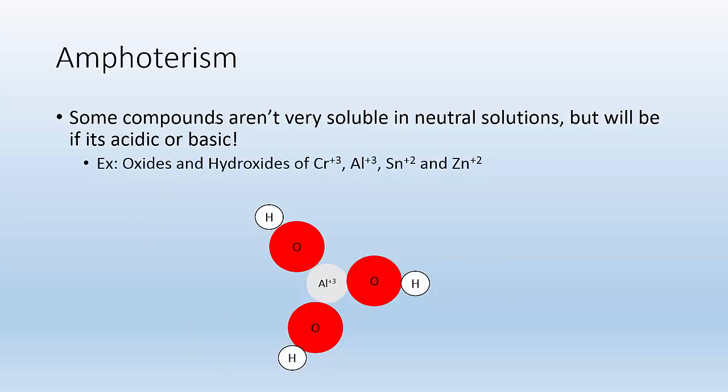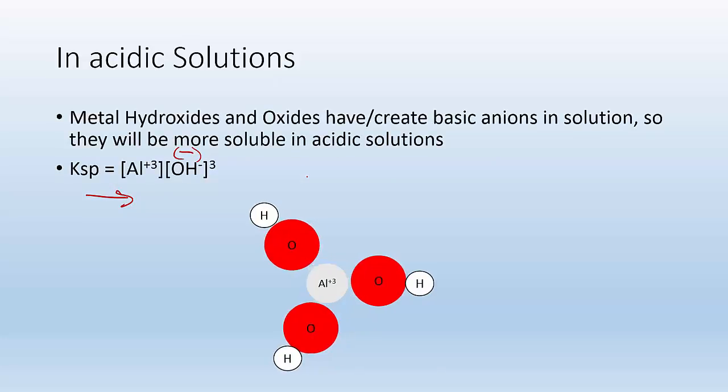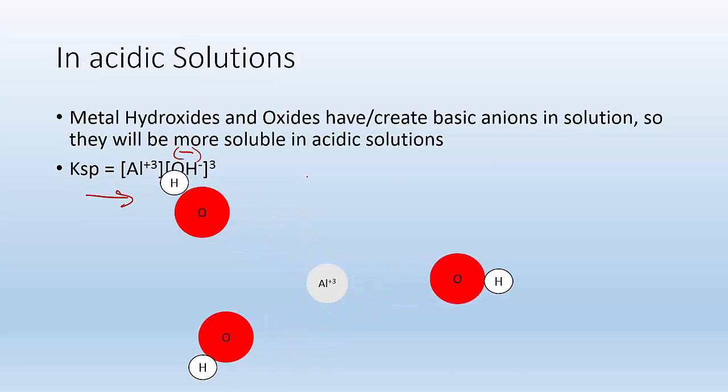Alright. Back to what I skipped over. So things to look for that can be amphoteric are going to be these cations as well as oxides and hydroxides. Those can be amphoteric. Alright. Now, I jumped ahead to this because I got so excited. I want to talk to you about this.